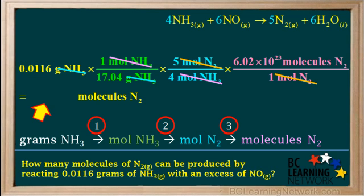We go 0.0116 divided by 17.04 times 5 divided by 4 times 6.02 times 10 to the 23rd. And the answer to three significant figures is 5.12 times 10 to the 20th molecules of N2. At this point, pause the video and do the calculation yourself and see if you get the same answer.